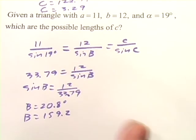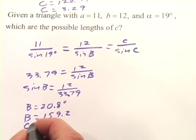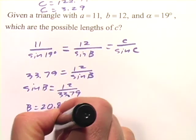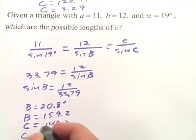Now we can figure out our two possible angles for C. So that would be 140.2 and 1.8.